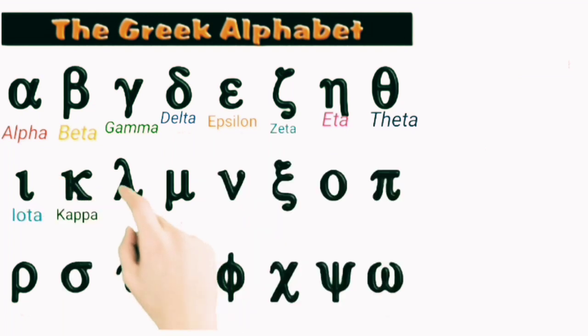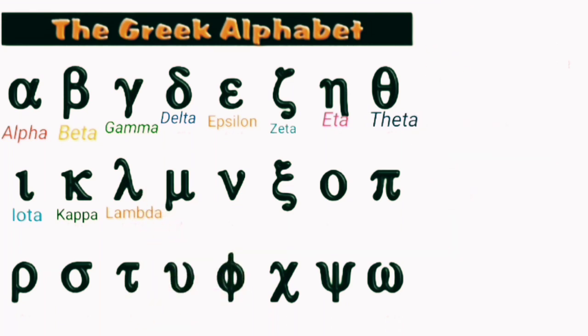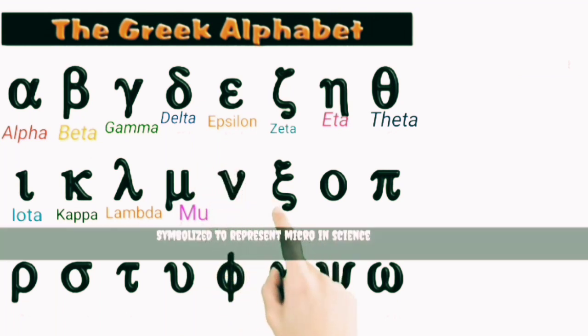This is iota, kappa. This is lambda, as we are familiar with it, used to show wavelength. This is mu, this is pronounced as mu. However, here it is written mu, but it is pronounced as mu.